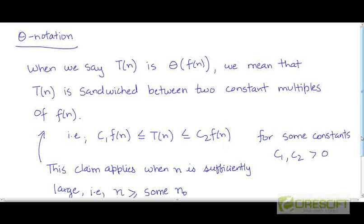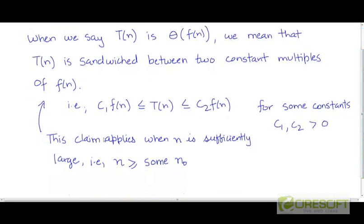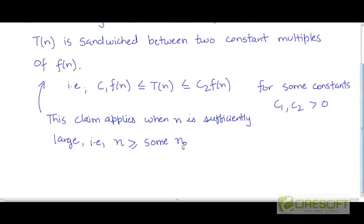And this applies for values of n that are sufficiently large. So for all large values of n, this condition must hold. T must be sandwiched between some two constant multiples of f. So the claim applies for large n, that is, for values of n that are beyond some threshold value called n0.